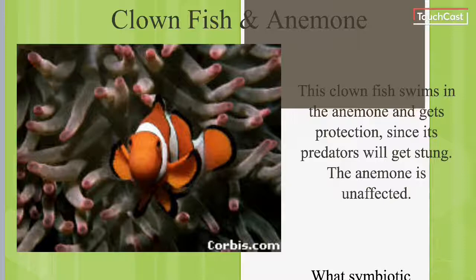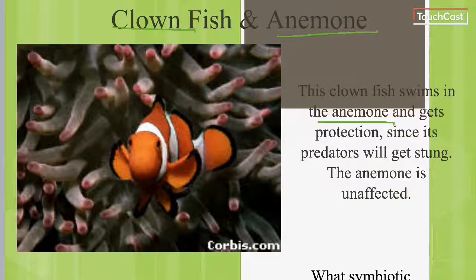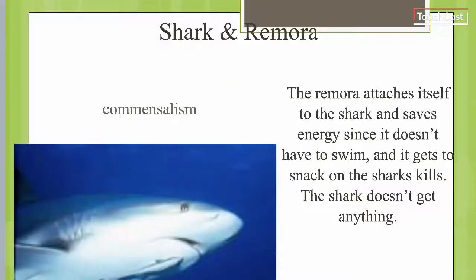Back to Finding Nemo — the clownfish and the sea anemone. The clownfish swims in the sea anemone and gets protection since its predators will get stung — that's a positive for the clownfish. The sea anemone is unaffected; the clownfish doesn't do anything great for it, nor anything negative. That's commensalistic.